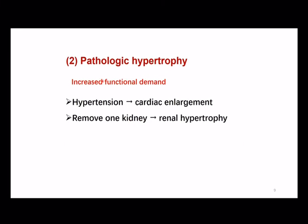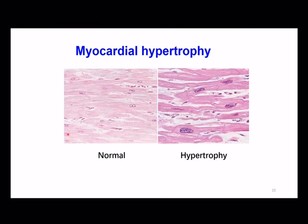The second type is pathologic hypertrophy. For example, in a hypertension case, the heart enlarges because of the increasing workload. The removal of one kidney usually causes the other one to undergo hypertrophy, because the remaining kidney needs to cover the work of two kidneys. The left picture is the normal myocardial cell. The right picture is myocardial hypertrophy. Compared to the normal cell, the hypertrophic cell has larger size, a larger nucleus, and darker staining of cytoplasm.